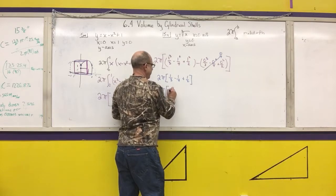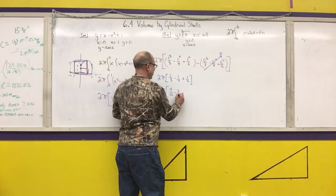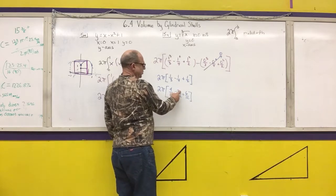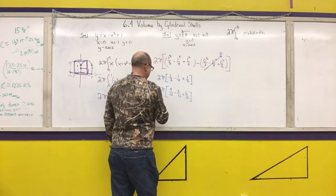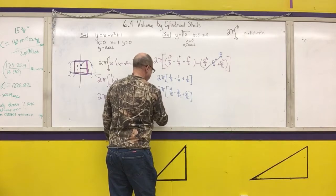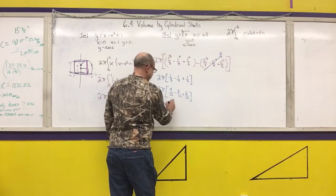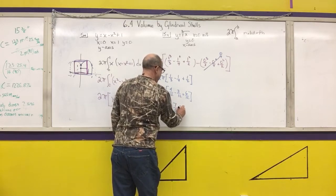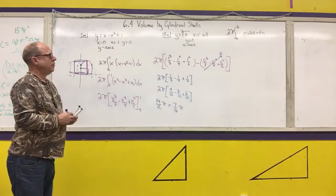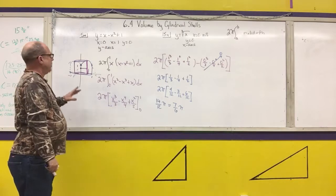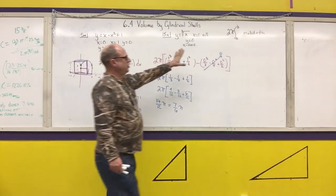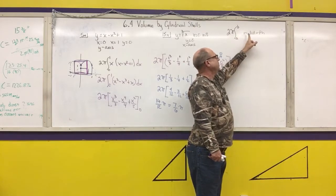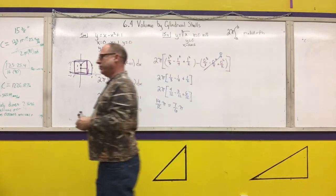The lowest common denominator is 12, so I have 4/12 minus 3/12 plus 6/12. 4 minus 3 is 1, and 1 plus 6 is 7. 7 times 2 is 14, giving 14π/12, which simplifies to 7π/6 cubic units — that would be the volume. I just memorize that it's 2π times the radius times the height times the thickness, and I figure out what each one of those values are.